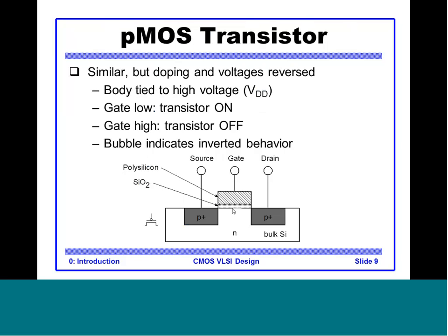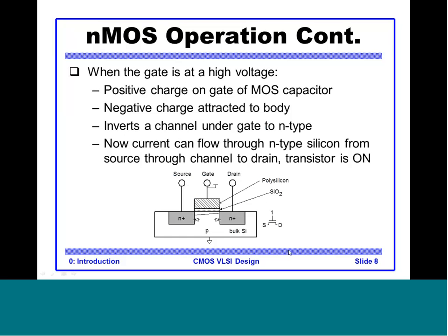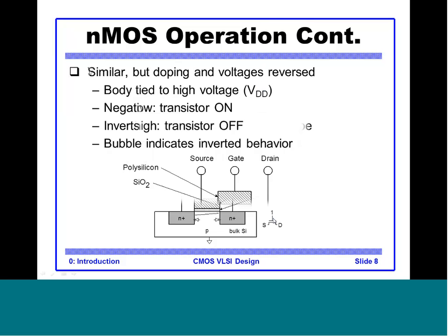A PMOS transistor is similar to NMOS except the voltages that turn it on and off are complemented. The N-type substrate is tied to VDD. Whenever the gate is low the transistor is on; whenever the gate is high the transistor is off. The bubble in the PMOS symbol indicates this inversion compared to NMOS, which has no bubble.